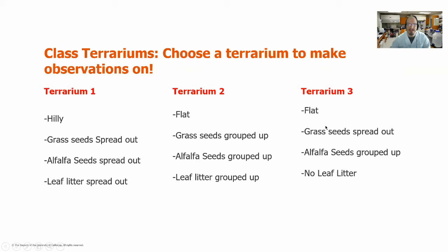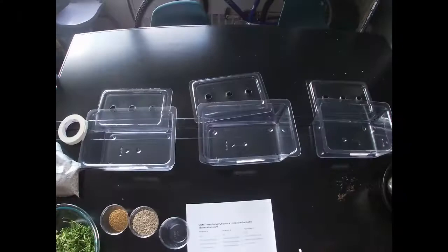Terrarium three will also be flat. I'll spread out the grass seeds and group up the alfalfa seeds. I'm not going to include any leaf litter in this one because I grabbed some weeds off my balcony, and there might be seeds in those weeds. So I want to make sure we have one terrarium without any outside interference from those weeds to see what happens. Now I'm going to go set those up.